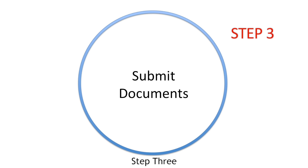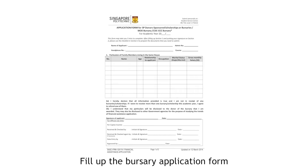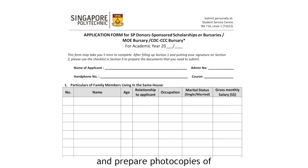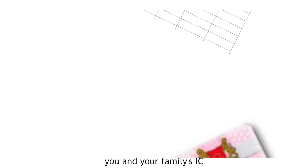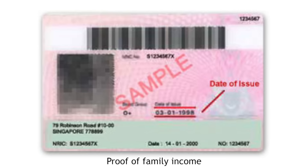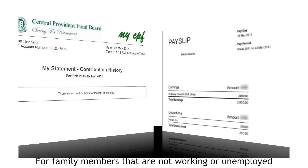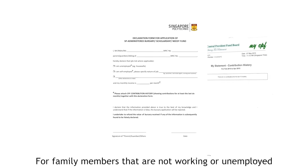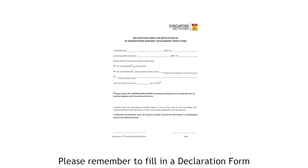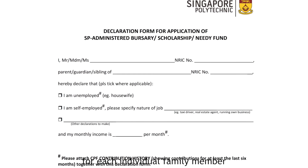Step 3: Submission of documents. Fill up the Bursary application form and prepare photocopies of you and your family's IC and proof of family income. For family members that are not working or unemployed, please remember to fill in the declaration form for each individual member.